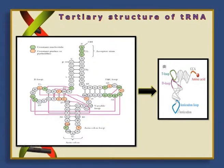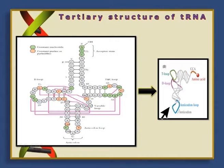Let us now see the tertiary structure of tRNA. We have already discussed the cloverleaf model of tRNA. The tertiary structure is formed when bases in the D-loop hydrogen bond with bases in the T-psi-C loop, or when bases in the D-loop hydrogen bond with bases in the variable loop. As a result, the cloverleaf model folds into an L-shaped structure, where the amino acid stem is at one end and the anticodon stem is at the opposite end, with the D-loop and T-loop found at the corners.